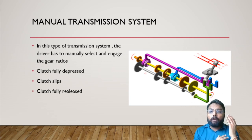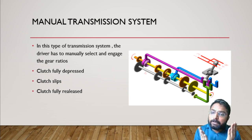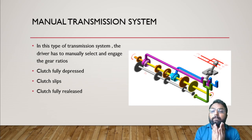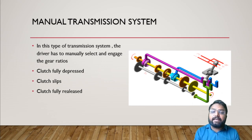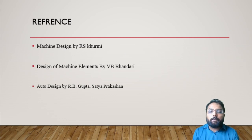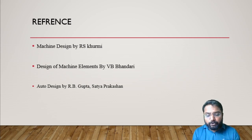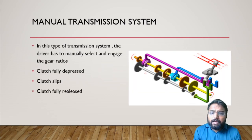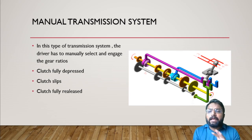Let's once again talk about how automatic and manual transmission systems differ from each other. The key difference is that automatic transmission provides an infinite number of ratios, whereas manual transmission cannot provide an infinite number of ratios. I hope you got each and every point in this particular session. This was your introduction to the transmission system — this is the basic criteria and the basic concept of your transmission system.